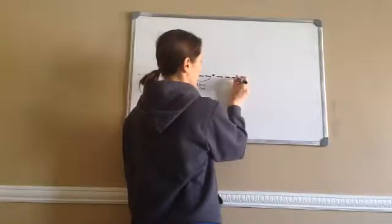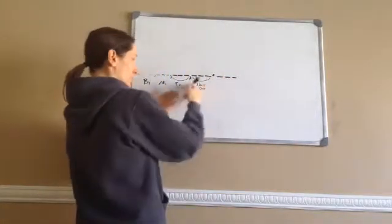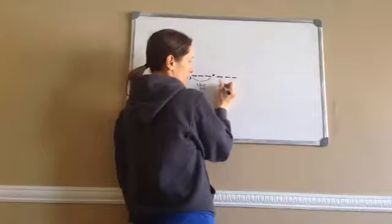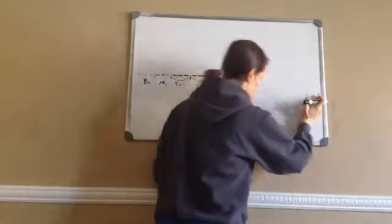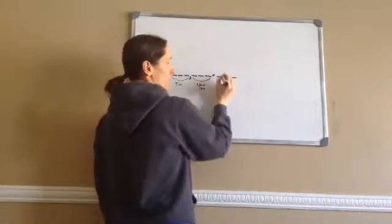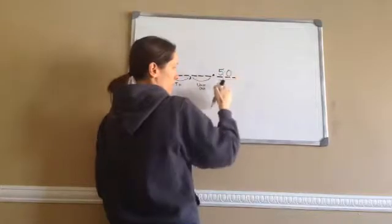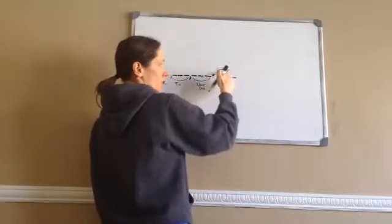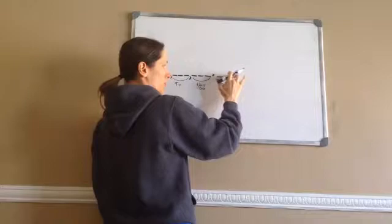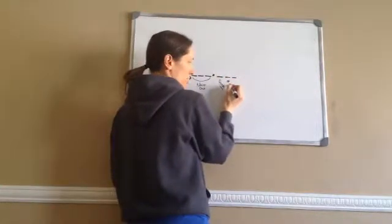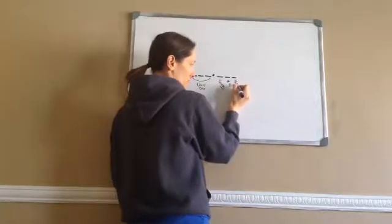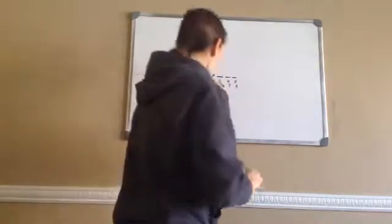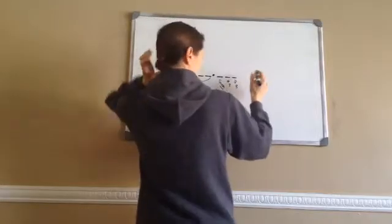Now let's do the right of the decimal. This one does not group into threes, yet it still carries on the same kind of pattern. Instead of starting with ones, this one actually starts with ten, and it's going to end with -THS on everything that comes after the decimal. Tenths — if I had 50 cents, that would mean I had five dimes, which is tens. So that's how I remember to start with tenths. Then hundredths with the -THS, thousandths with the -THS. So: tenths, hundredths, thousandths — that's how it keeps going.